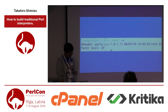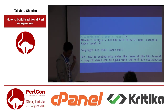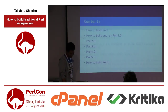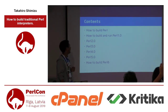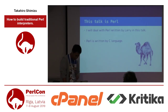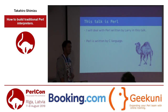Here are the results. For example, Perl 1.0, Perl 2.0, Perl 3.0, and Perl 4.0. This talk contains how to build Perl 1.0, Perl 2.0, Perl 3.0, and Perl 6. I will deal with Perl written by Larry in this talk. Perl is written in C language.